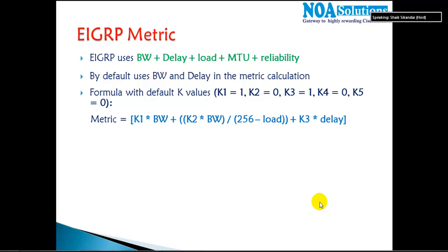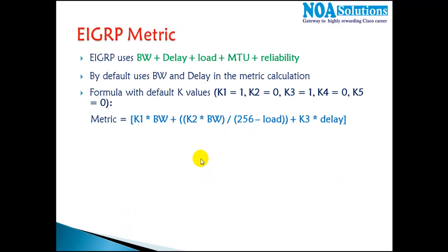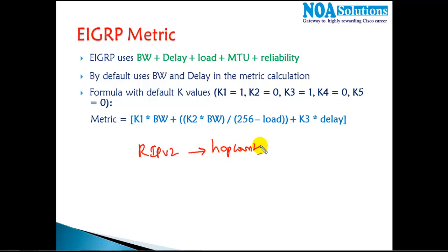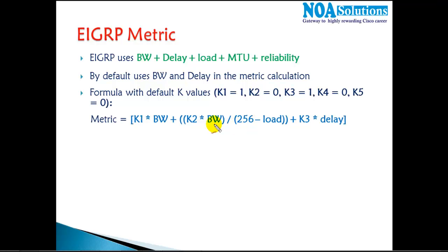Our main focus in this section is understanding the EIGRP metric calculation process and the different formulas it uses. Just like RIP version 2, which decides the best route based on hop count — choosing the route with the least hops — EIGRP is different. EIGRP calculates the best route based on five factors: bandwidth, delay, load, MTU, and reliability.